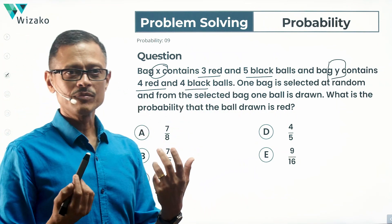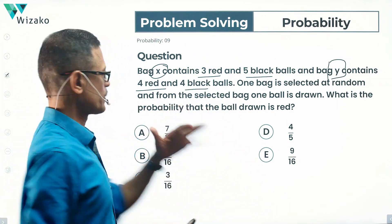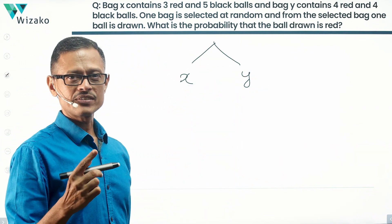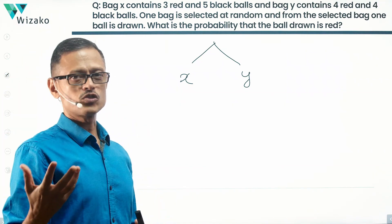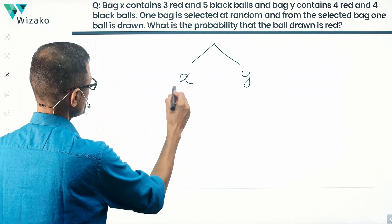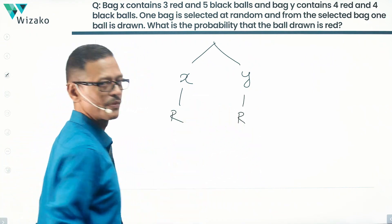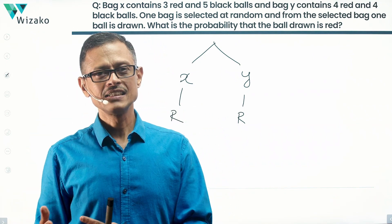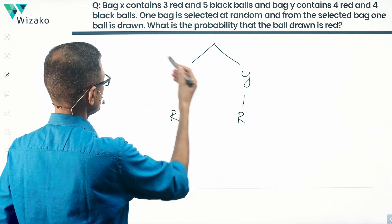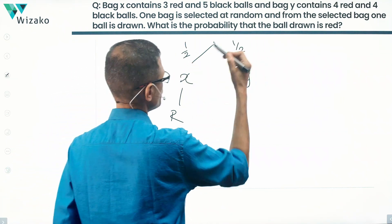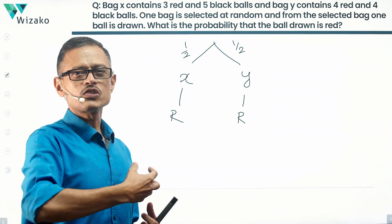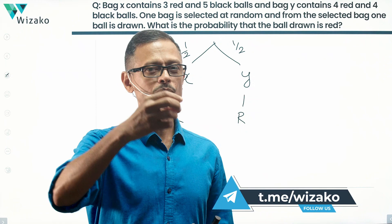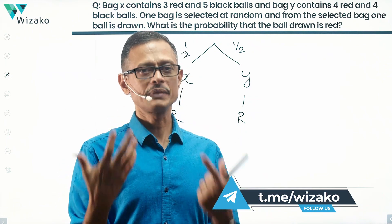We are selecting the bags at random — it could end up being X or it could end up being Y. The two bags are equally likely to be selected; one is not more preferred than the other. So the probability of selecting bag X equals half, and the probability of selecting bag Y also equals half. We want to compute the probability that the ball drawn from one of these two randomly selected bags is red.